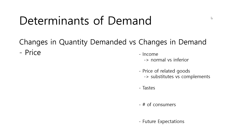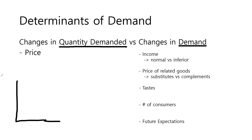Let's look at the determinants of demand. This is a confusing term — people usually mix up quantity demanded and demand, but a change in quantity demanded and a change in demand are very different. Price, quantity, and labeling the graph are important. When we refer to a change in quantity demanded, it happens when the price changes — for example, if the price goes down, we will purchase more, moving along the curve. This is a change in quantity demanded.